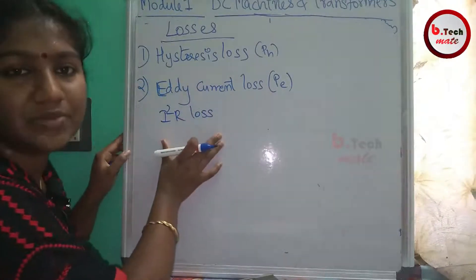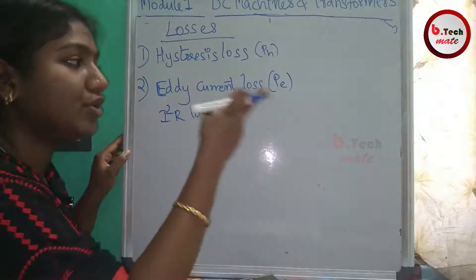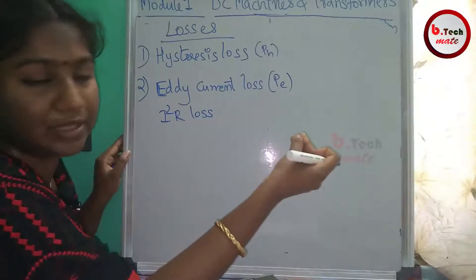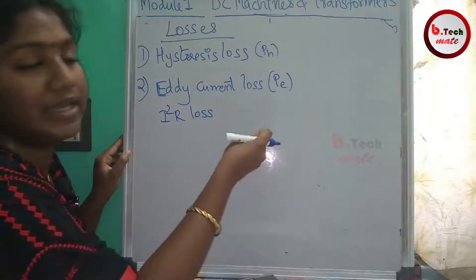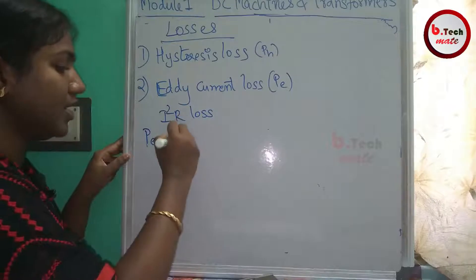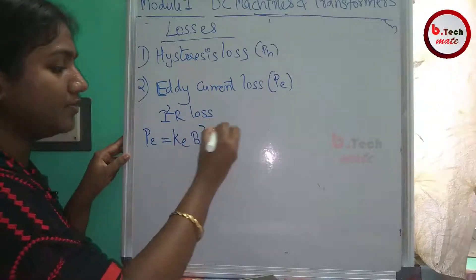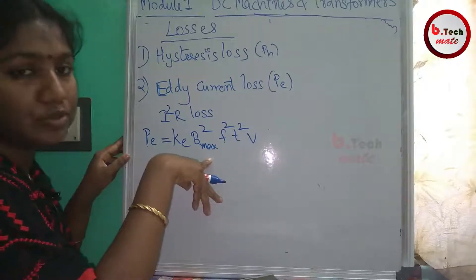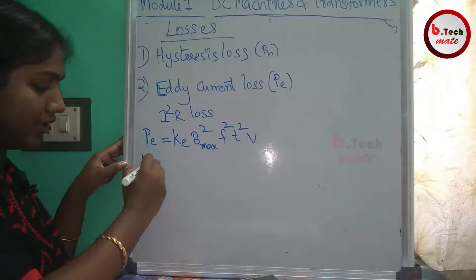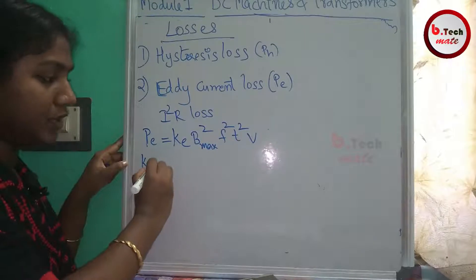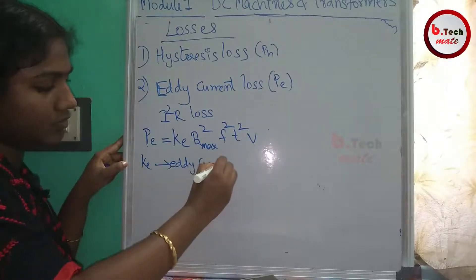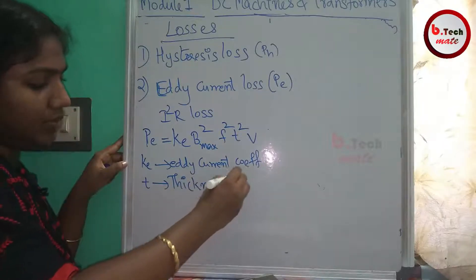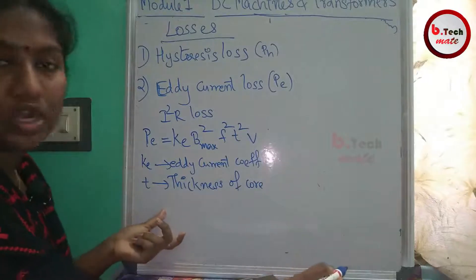The eddy current loss formula is: P_e = K_e × B_max² × f² × t² × V, where B_max is the maximum flux density, f is the frequency, V is the volume, K_e is the coefficient of eddy current, and t is the thickness of the lamination.